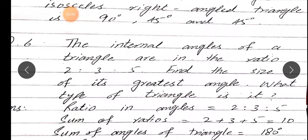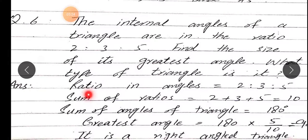Ki internal angles - internal kahte hain beta, andarooni angles - kisi bhi triangle ki, unka ratio diya gaya hai 2:3:5. Hamne size find karna hai sabse greatest angle ka, aur what type of triangle is it. Iska answer hai: ratio in angles 2:3:5. Sum of ratios: 2 + 3 + 5 = 10. Sum of angles of triangle = 180 degrees.